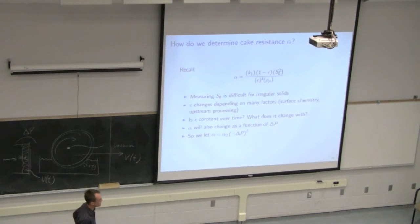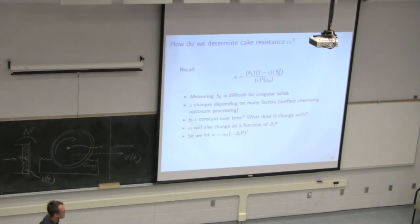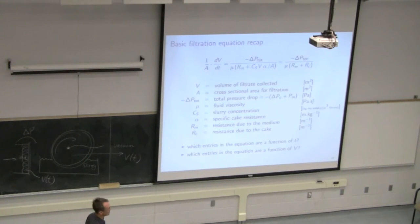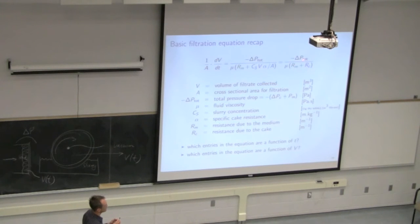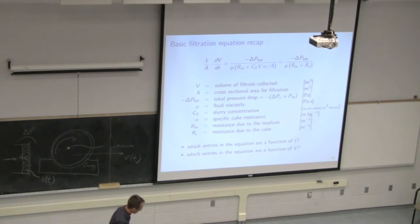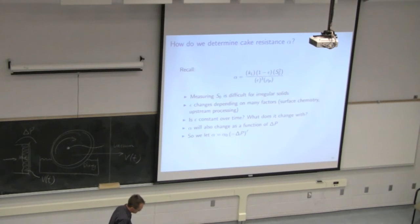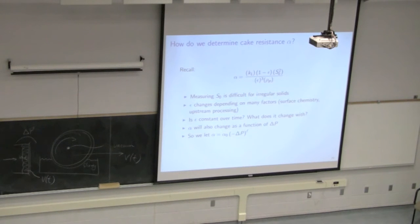Student question: when RC changes, how do you keep pressure constant? RC increases as the cake builds up in thickness. We can adjust the pressure to counteract it — simply apply a greater pressure drop to counter the resistance — if we want constant flow. Can you have both constant pressure and constant flow simultaneously? You have to pick one or the other.